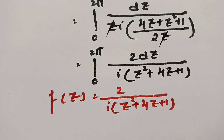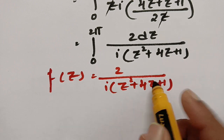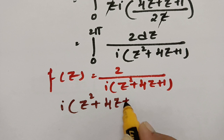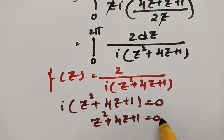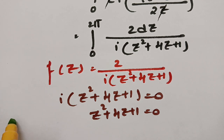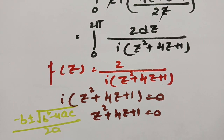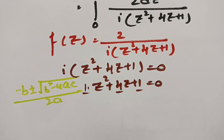To find the poles, we equate the denominator to zero: z² + 4z + 1 = 0. Using the quadratic formula z = (−b ± √(b²−4ac)) / (2a), with a = 1, b = 4, c = 1.